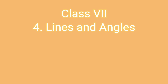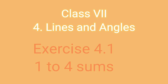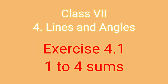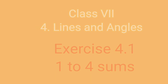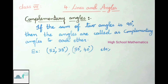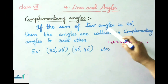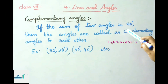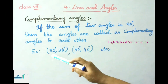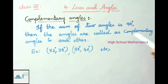Hello everyone, welcome to High School Mathematics channel. Today we are going to learn Class 7 Chapter 4: Lines and Angles, Exercise 4.1. Before going to the exercise, let us see today's check your progress. See the definition here: complementary angles — if the sum of two angles is 90 degrees, then the angles are called complementary angles to each other.